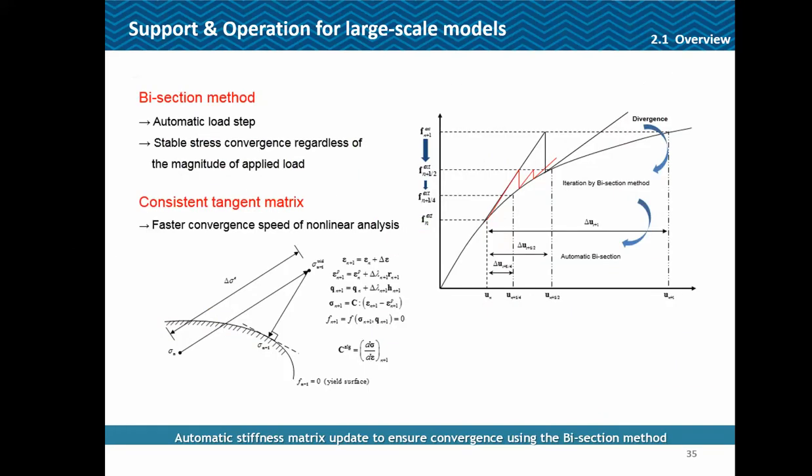We have also introduced a bisection method. In any nonlinear analysis, the size and number of steps matter a lot for achieving convergence. In FEA, if the step size was too large the model might diverge. But in FEA NX, the bisection method means that if such a condition is met and the analysis could be diverging, it can automatically update the stiffness matrix to ensure convergence. Giving smaller steps to begin with is always recommended, but this handles cases where convergence is missed.